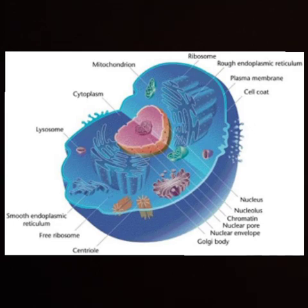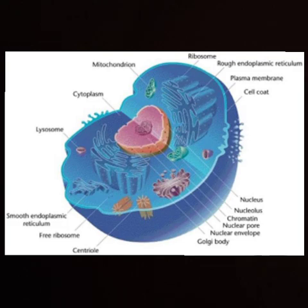In Eukaryotic cells, a well-defined nucleus is present. The nuclear membrane is absent in Prokaryotic cells, while on the other hand, nuclear membrane is present in Eukaryotic cells.